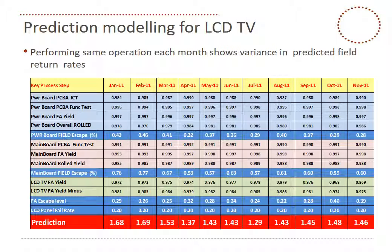When you see the chart, we have a standard LCD panel failure rate expected, which is constant because the panels are not manufactured by these TV assemblers. From January through to November 2011, we can see how the failure rate is changing each month. That is normal because of the level of latent defects in the manufacturing process, which clearly escape in different levels into the warranty failure rate. This gives us a way of monitoring month by month how well our products are going to perform in the 12-month warranty period.